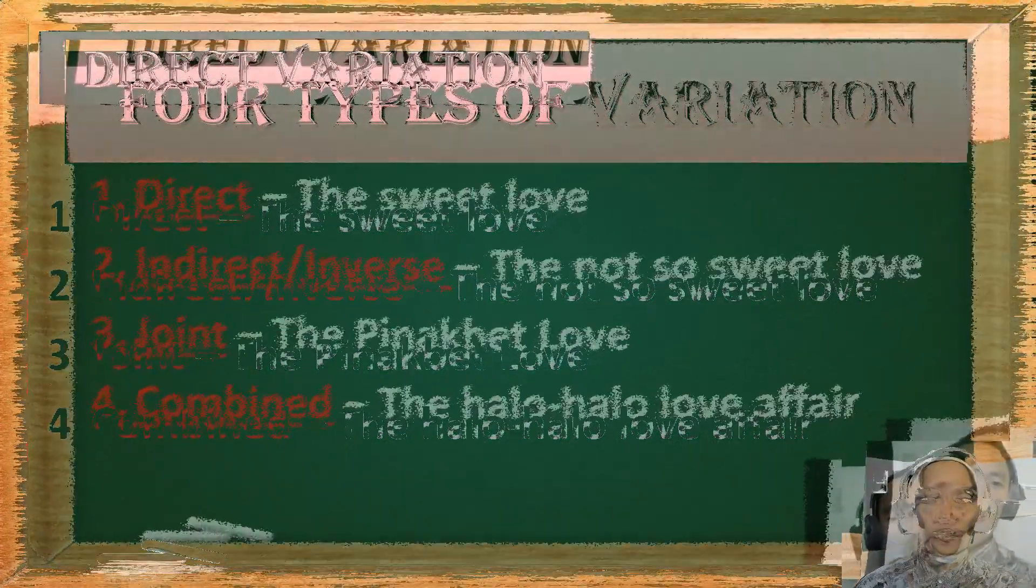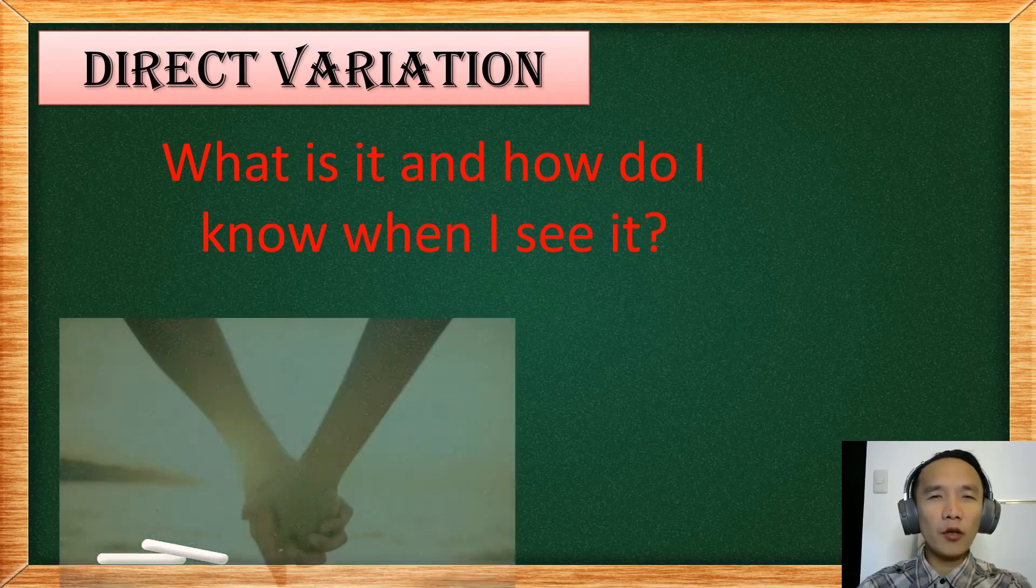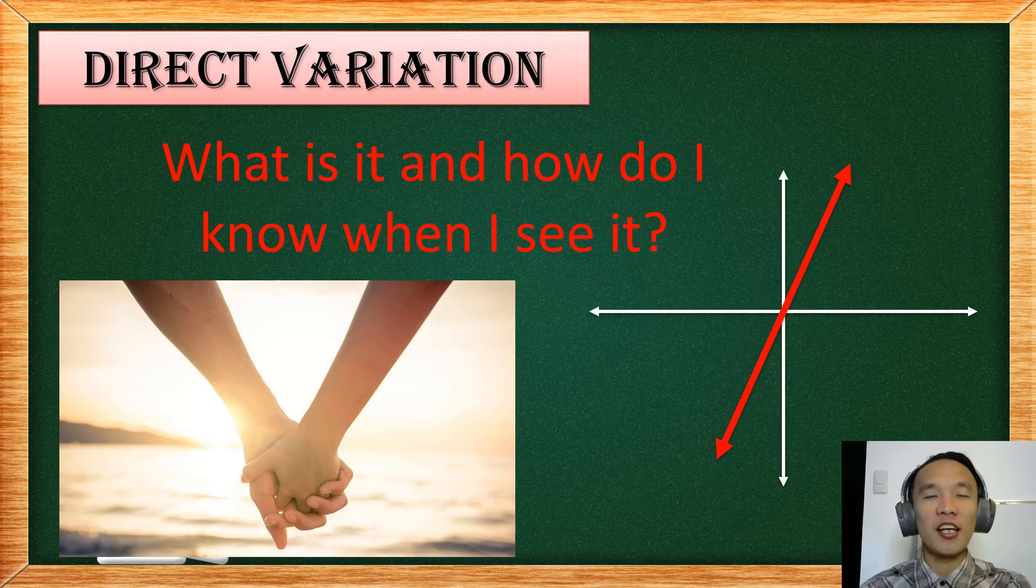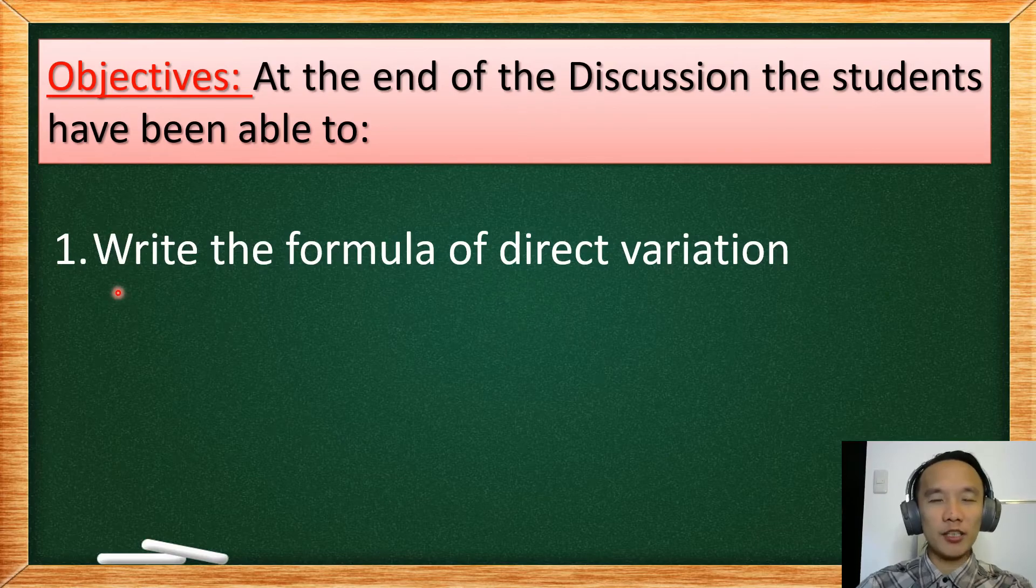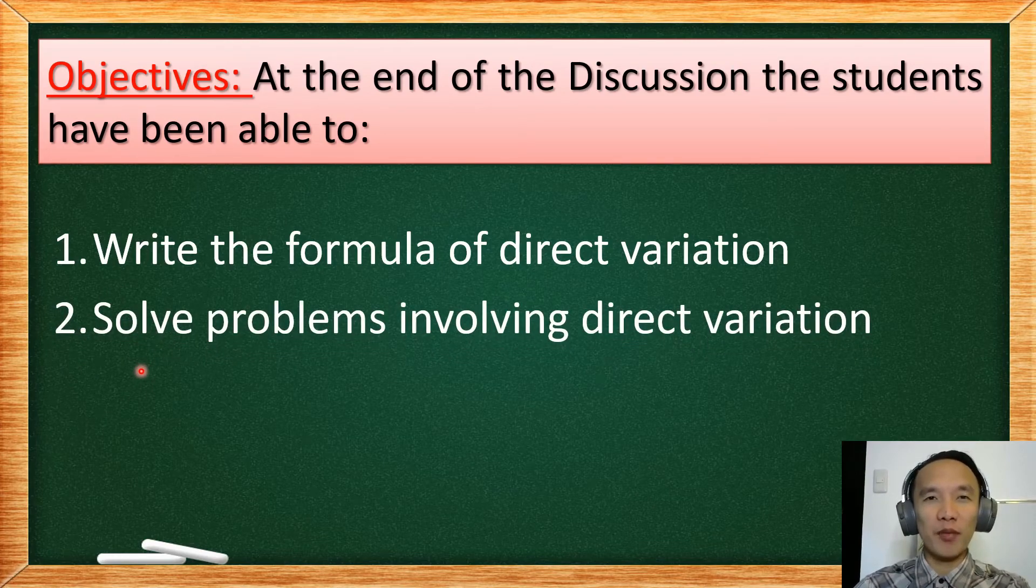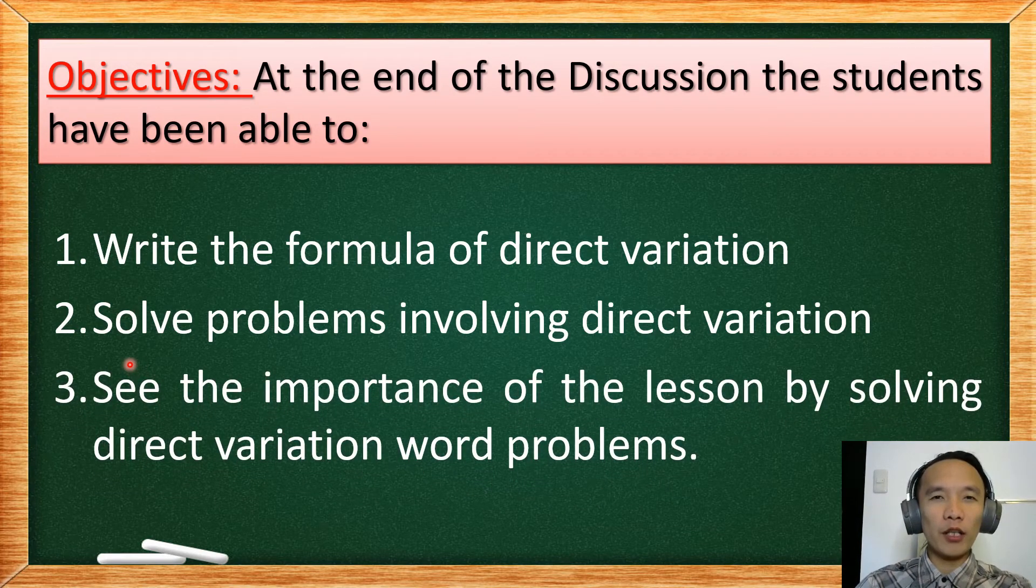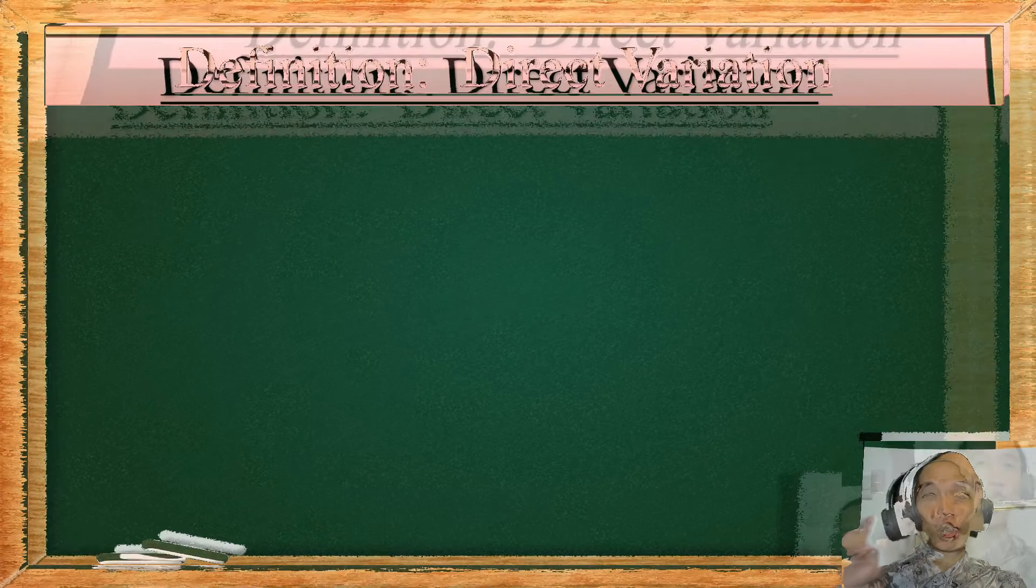So what is a direct variation? How do we know once we see something if it's already a direct variation? First lesson, our objective. First, we are going to write the formula for direct variation. Second is we are going to solve problems involving direct variation. And the last is we are going to find out on where we can use direct variation into real life problems.